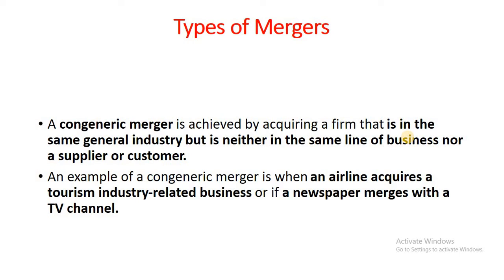For example, if an airline company acquires a tourism industry related business, it will be a congeneric merger. Both the airline company and the tourism industry related business work in the same general industry, but they are not in the same line of business. Similarly, if a newspaper merges with a TV channel, it will be a congeneric merger.